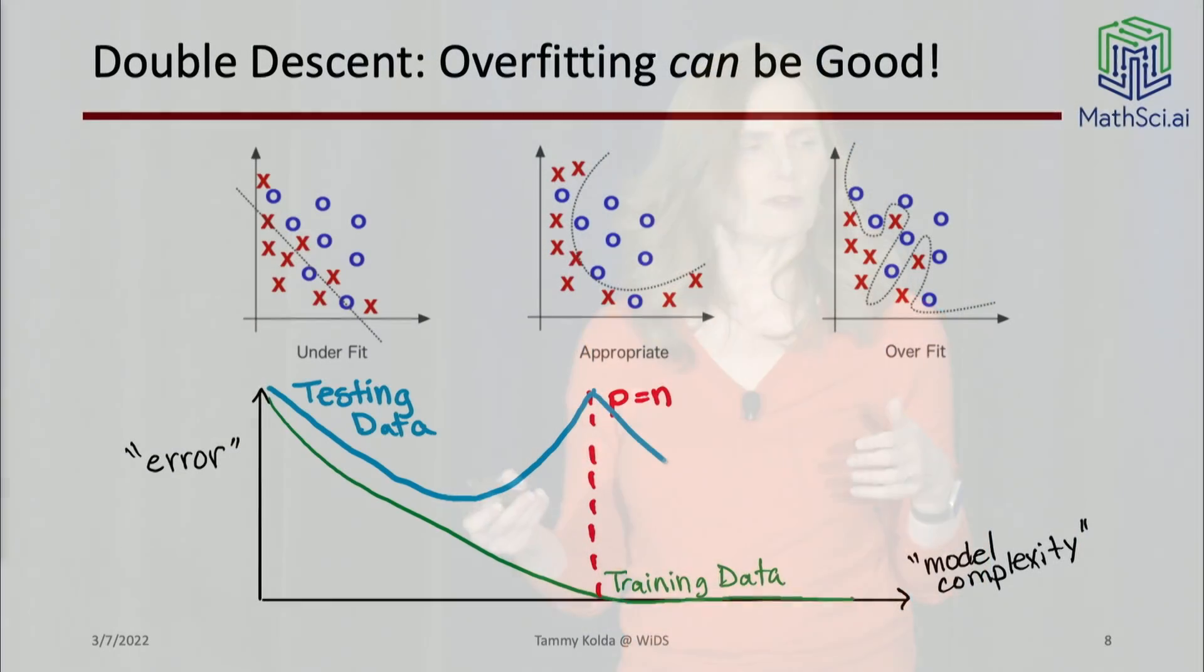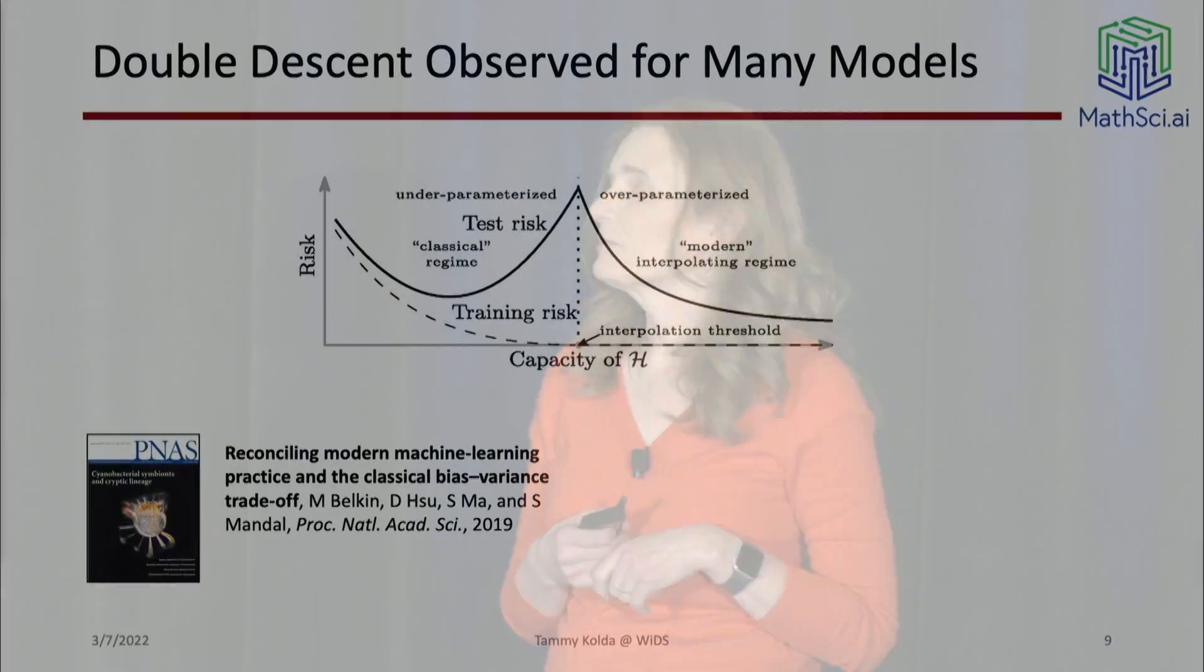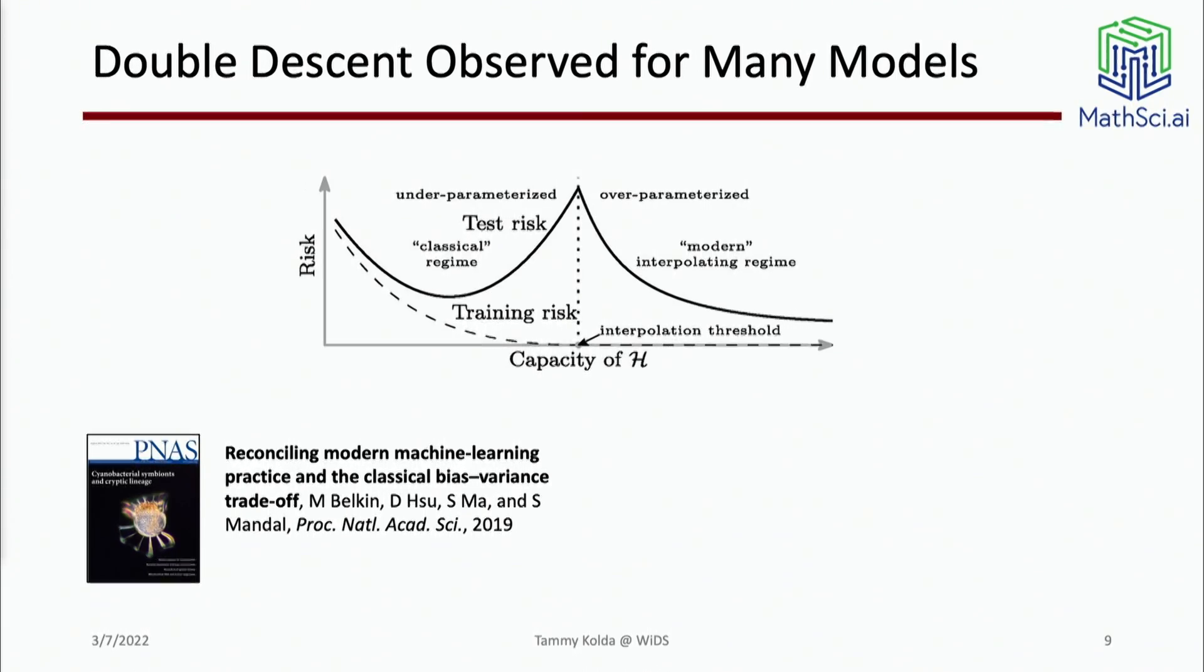People started asking: what if you keep adding more parameters? It actually can improve beyond what you saw originally. You can actually get a lower error than if you stopped at this happy medium. If you stare at this over-fit picture, that's actually a pretty good fit. It's a pretty smooth line between those X's and O's. This was something seen a lot in deep learning - using way too many parameters, a ridiculous number, can actually be better. There's a lot of mathematical thought about this. There's this paper that came out in the Proceedings of National Academy by Misha Belkin, Daniel Su, and Ma and Mandel that really opened the door, took a mathematical approach to looking at this.